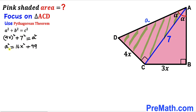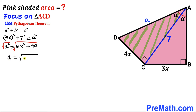So therefore a² turns out to be equal to 16x² + 49. Now I'm going to undo this square by taking a square root on both sides, so therefore our lowercase a value simply turns out to be √(16x² + 49).